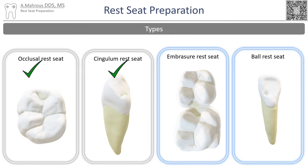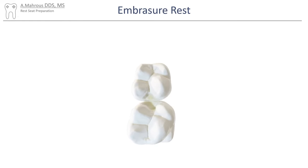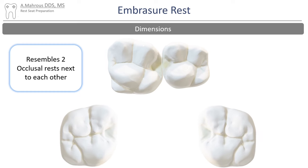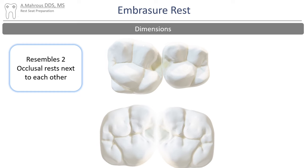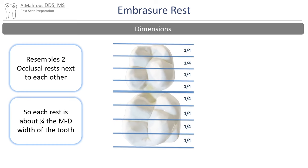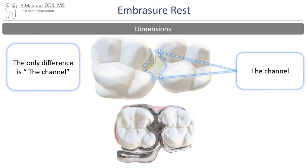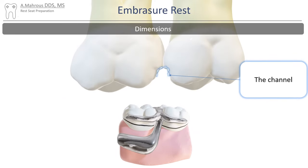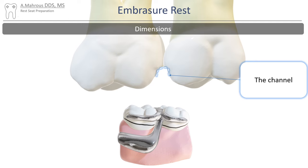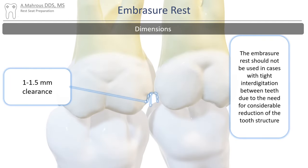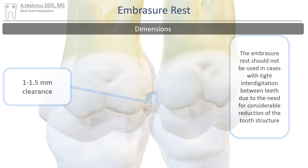Now let's move on to the embrasure rest seat preparation. The embrasure rest seat looks like two occlusal rests stuck together. The dimensions of each side are also one-fourth of the mesiodistal dimension of the tooth. A unique feature of the embrasure rest is the presence of a channel — a prepared space that allows enough clearance for the metal to connect the rests and the retentive clasps. Channel metal should have 1 to 1.5 millimeters of clearance.